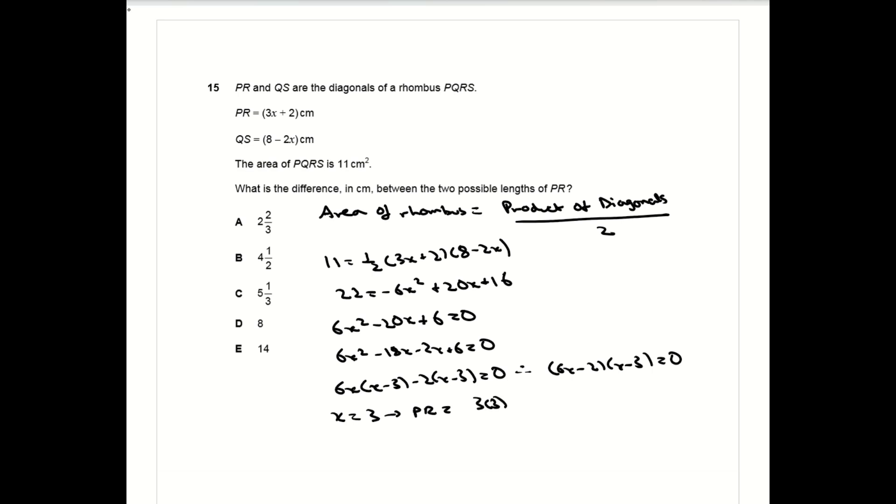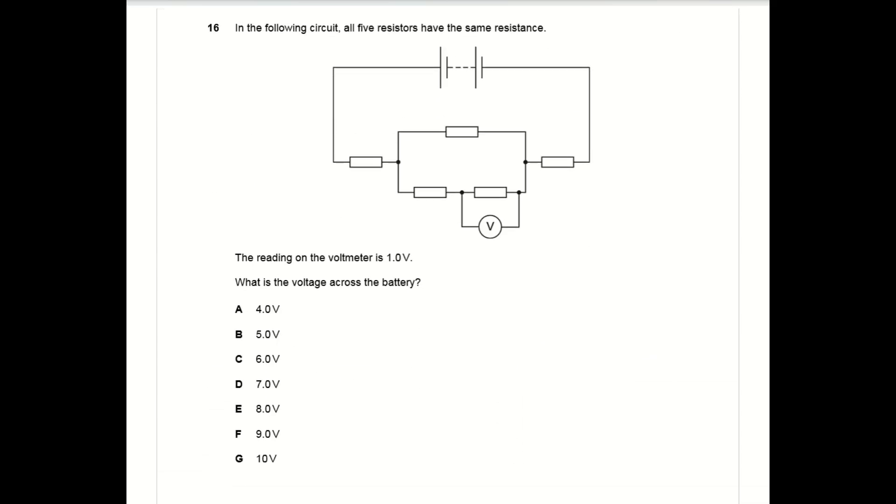So the two values of x are three and a third. Using three you get the value of PR as 11, and using a third you get the value of PR as three. The difference between these two values, which is what you're asked to work out, is eight.